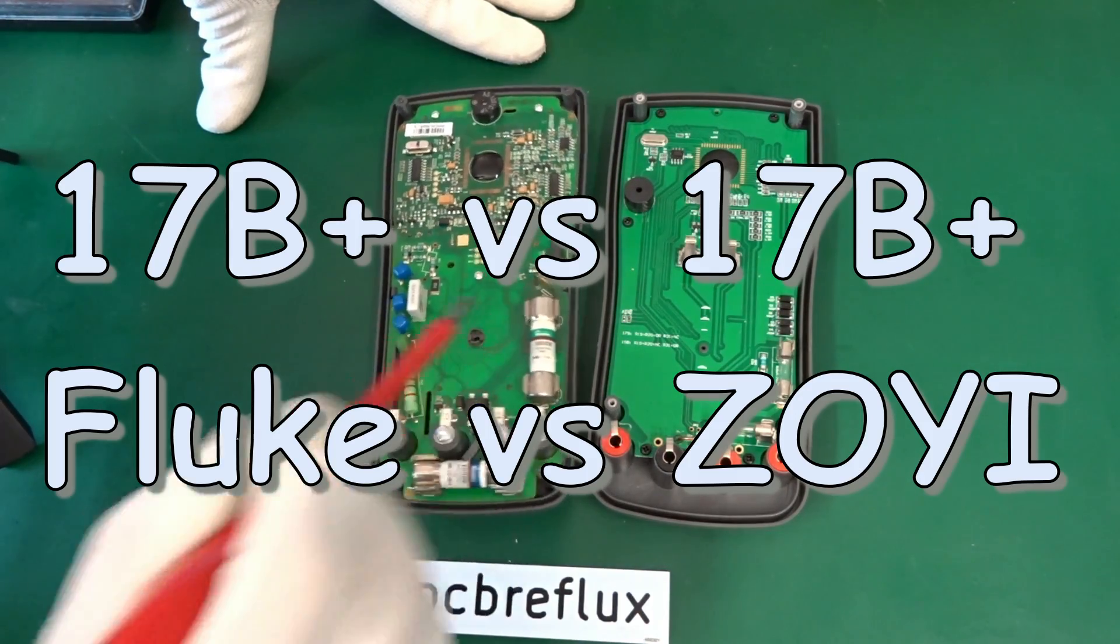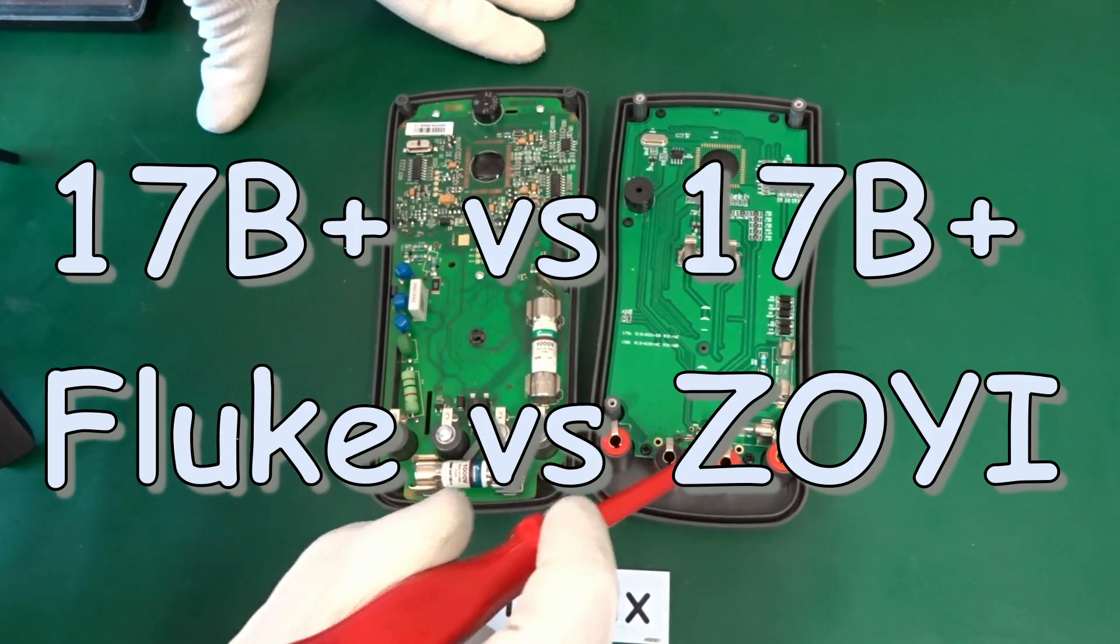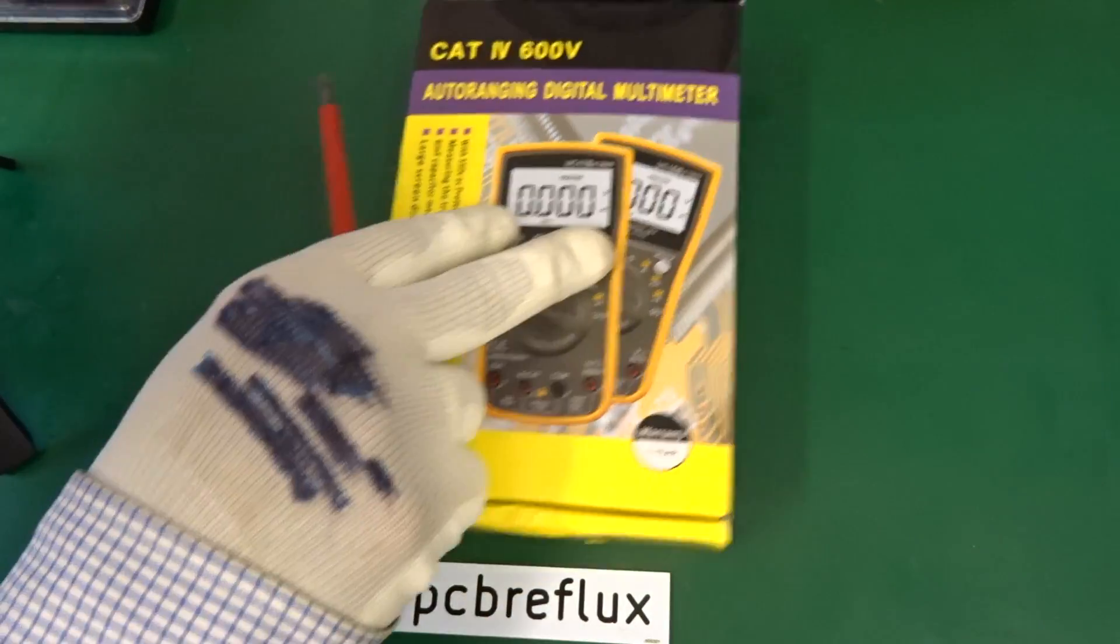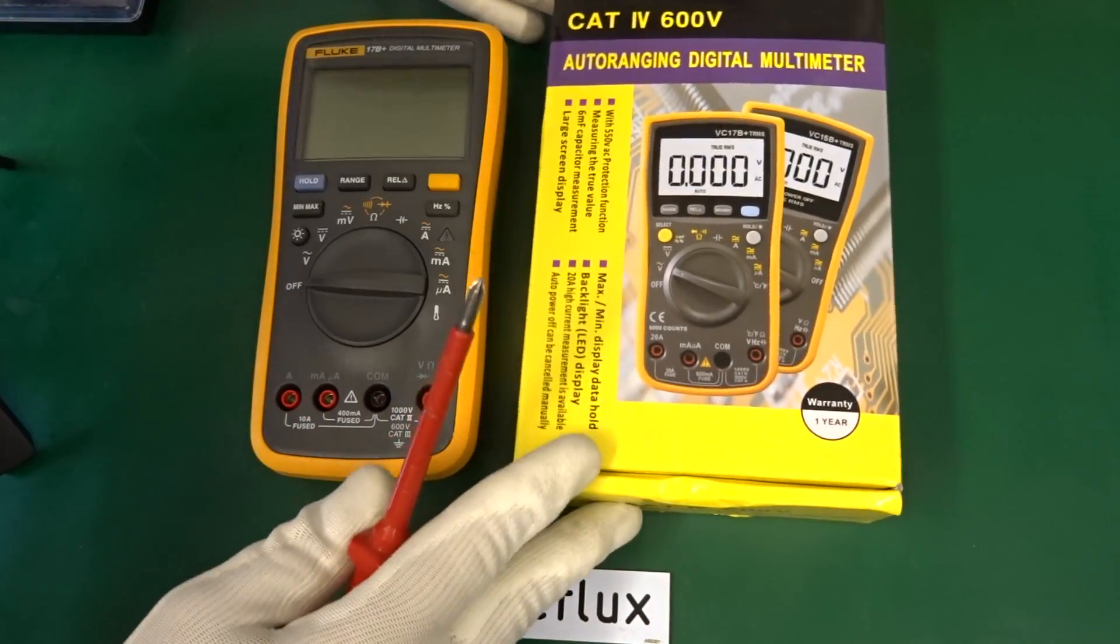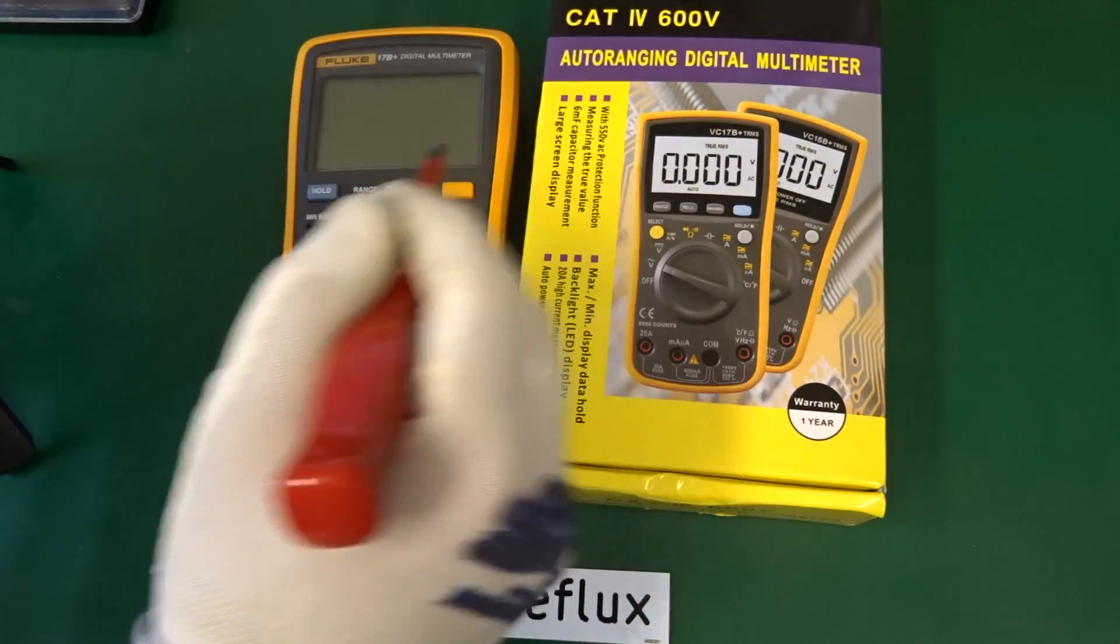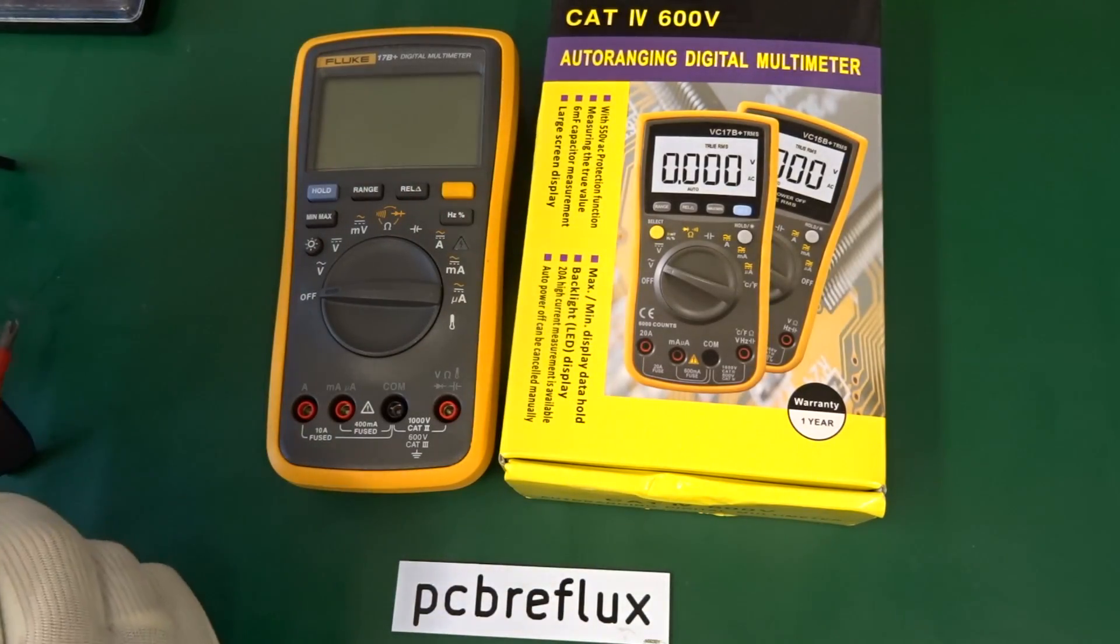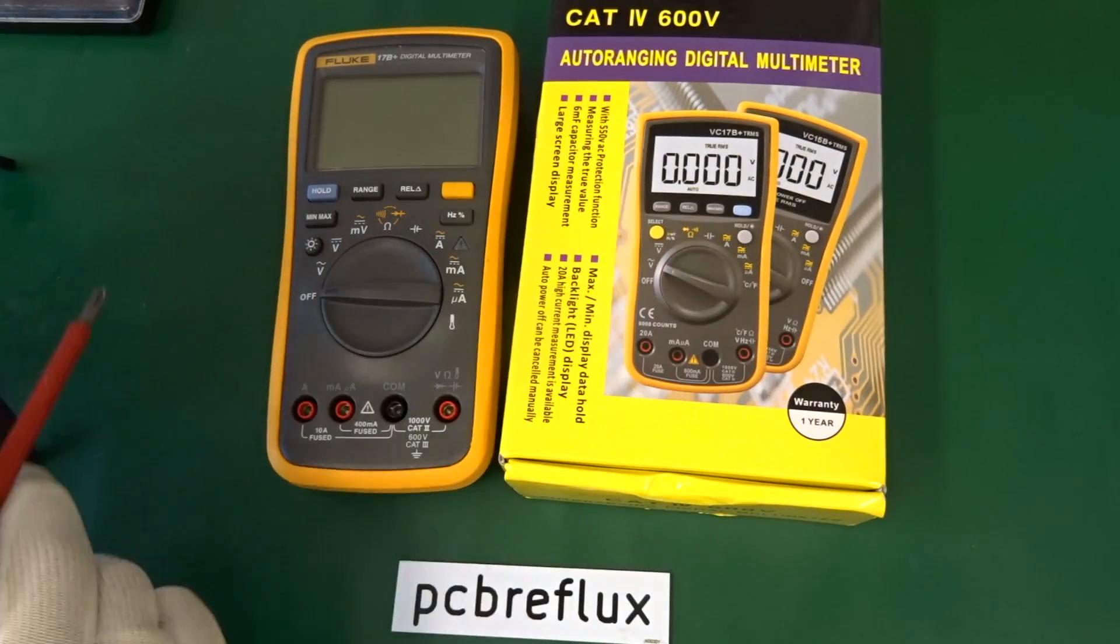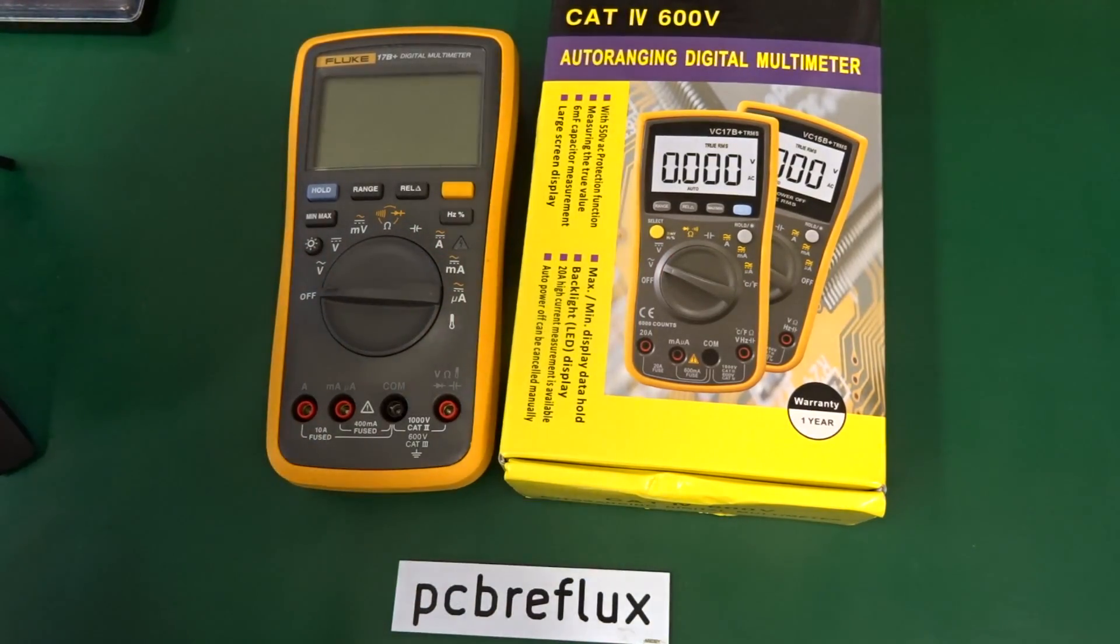Hi, today I want to talk about a multimeter, the VC70B Plus. And as you might see before, I've also have a Fluke 17B Plus. So I think we can compare the both together. And as you might see also, the look and feel are a little bit similar.